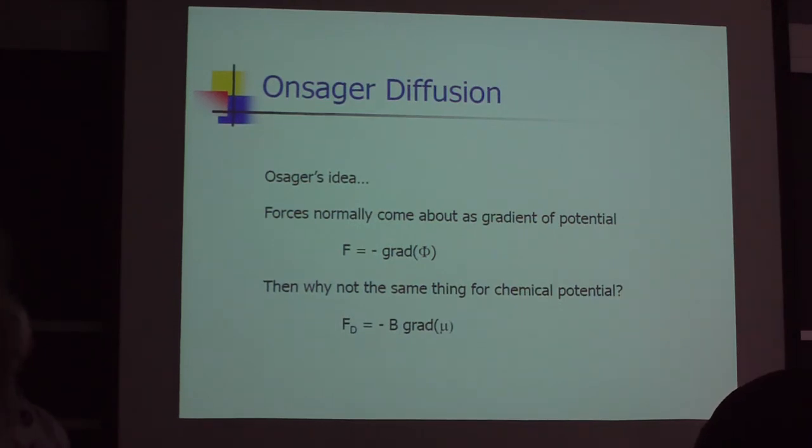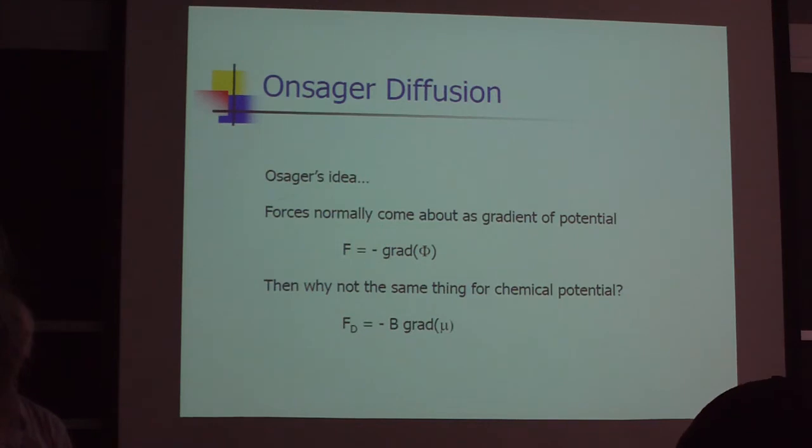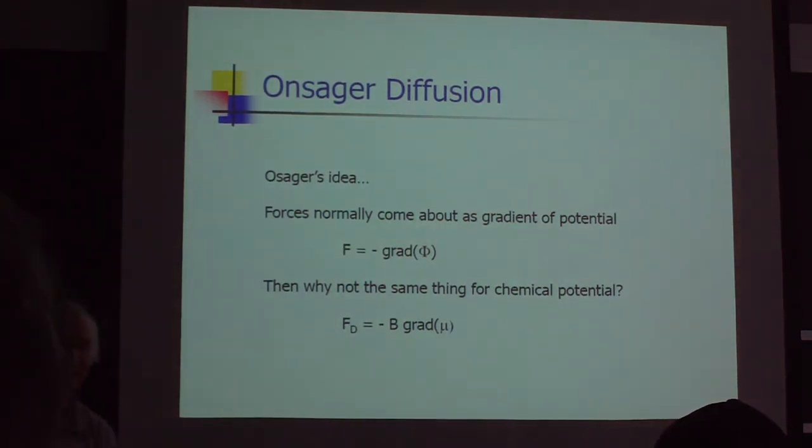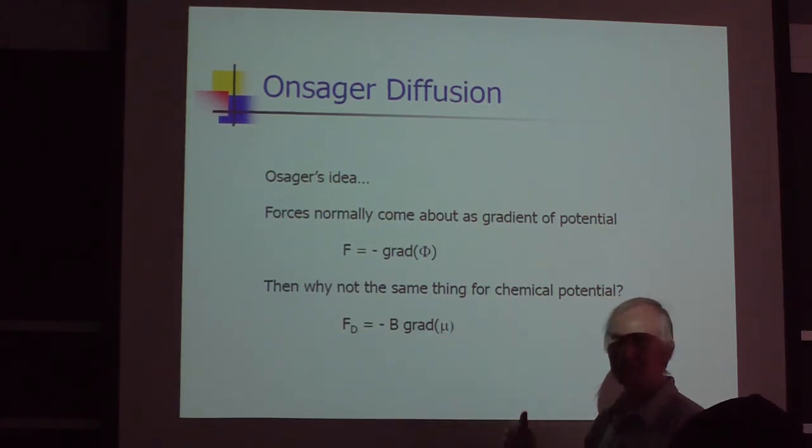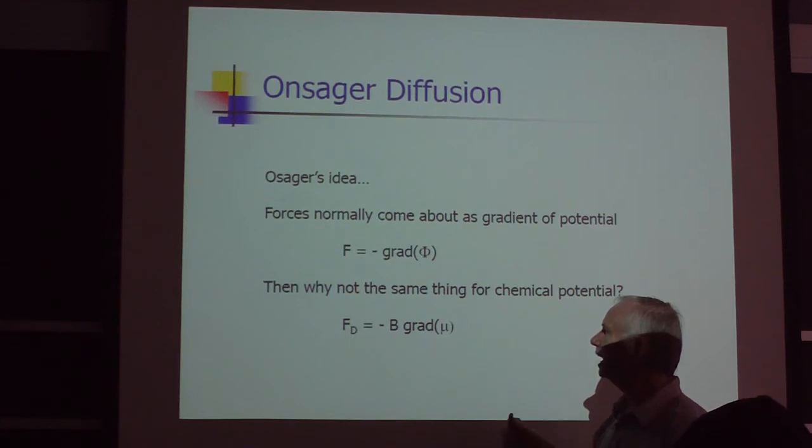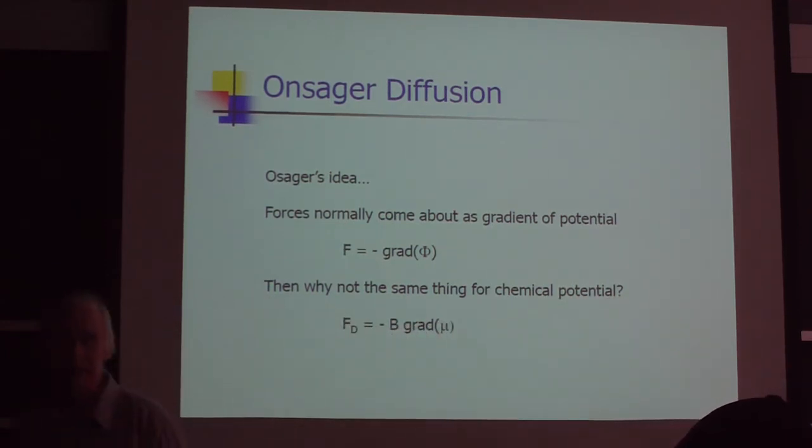So what's going on in the miscibility gap? It may be related to a concept from Onsager. To oversimplify: if I have a gravitational potential, I can pull something up, and the force makes it fall. So what about chemical potential? From Onsager's point of view, if you have a chemical potential, you get a force related to changes in the chemical potential.